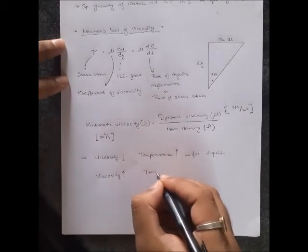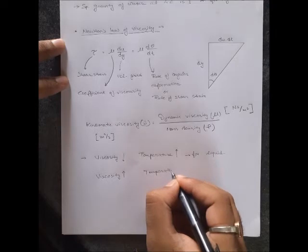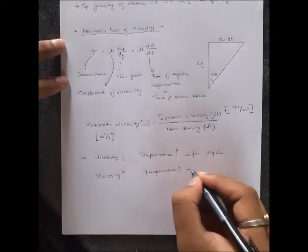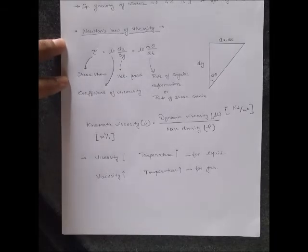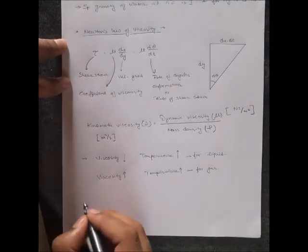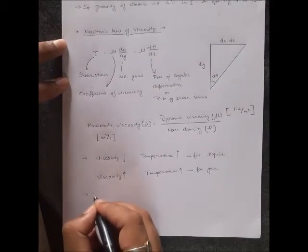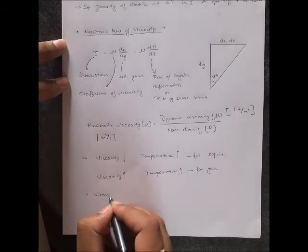This happens in gases because Brownian motion increases with increasing temperature, creating more randomness and more collisions, so viscosity increases. Now, the origin of viscosity.